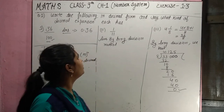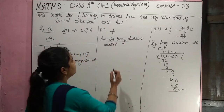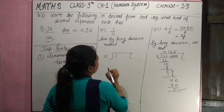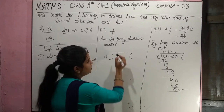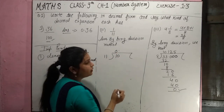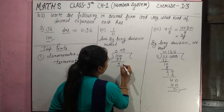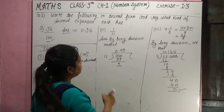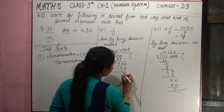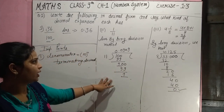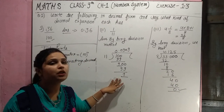The second question is 1 by 11. We will solve this using the long division method. 1 does not go into 11 directly, so we place a decimal point and bring down a zero, giving us 10. We get 0 as a quotient digit, then we have 99, and again we get remainder 1. So the pattern repeats: the remainder 1 keeps coming back.